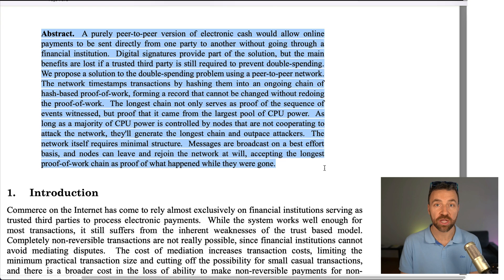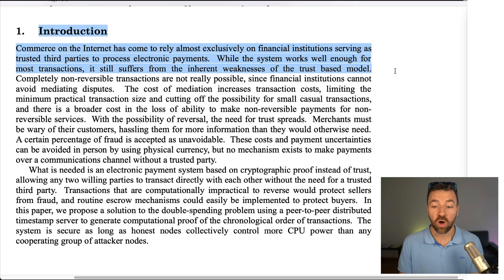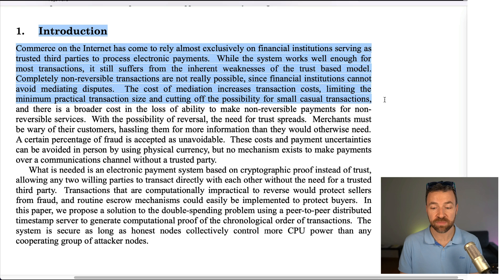Number one, introduction. Commerce on the internet has come to rely almost exclusively on financial institutions serving as trusted third parties to process electronic payments. While the system works well enough for most transactions, it still suffers from the inherent weaknesses of the trust-based model. Completely non-reversible transactions are not really possible since financial institutions cannot avoid mediating disputes. The cost of mediation increases transaction costs, limiting the minimum practical transaction size and cutting off the possibility for small casual transactions.